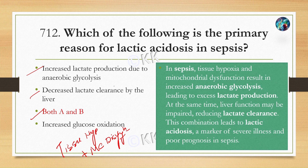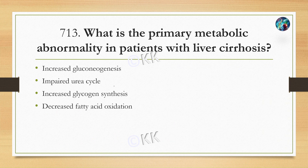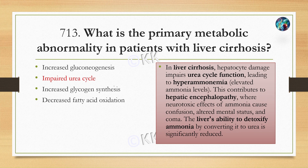Next question: what is the primary metabolic abnormality in advanced liver cirrhosis? Option A: increased gluconeogenesis. Option B: impaired urea cycle. Option C: increased glycogen synthesis. Option D: decreased fatty acid oxidation. The correct answer is Option B: impaired urea cycle.